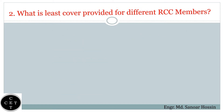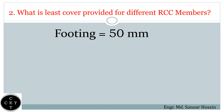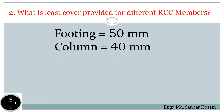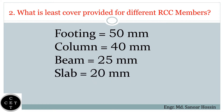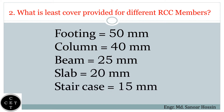Question number two: What is the least cover provided for different RCC members? Footing: 50 millimeters, column: 40 millimeters, beam: 25 millimeters, slab: 20 millimeters, staircase: 15 millimeters.